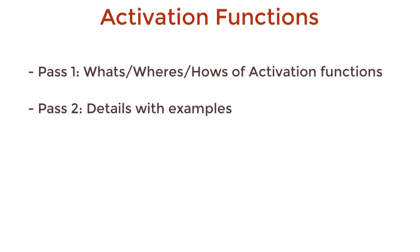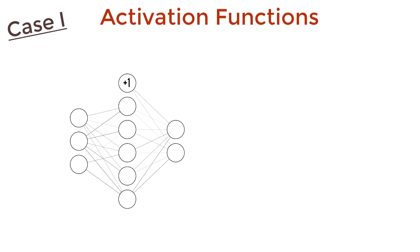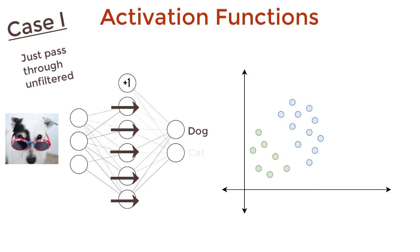Exciting stuff coming up. So let's jump into it. Case 1. We have this neural network here with a single hidden layer. Nothing fancy. Take the inputs, multiply it with the weights, add the bias term, and just pass it to the next layer. This neural network can learn how to classify data that is separable by a line.